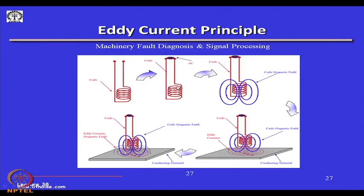The principle behind eddy current testing: if a coil is supplied with a high-frequency AC signal, there will be a magnetic field associated with this coil. If this coil is brought near a conducting material, because of its magnetic field, a series of circular eddy currents will be formed. These eddy currents will also produce a magnetic field. If there is a defect or change in thickness in the conducting material, the magnetic field produced by these eddy currents will be different.